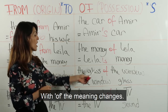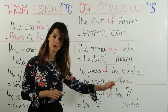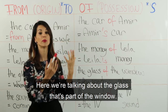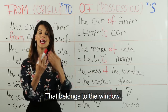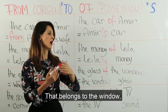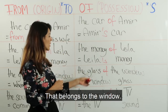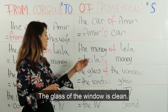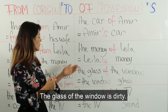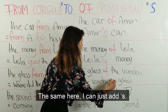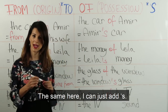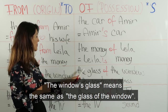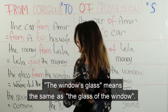'The glass of the window' — here we're talking about the glass that's part of the window, that belongs to the window. هوني هلا عم نحكي عن زجاج الشباك — ممكن عشان نوصفه. The glass of the window is clean. The glass of the window is dirty. I can add apostrophe S: 'The window's glass' means the same as 'the glass of the window'. هالجملتين إلون نفس المعنى.